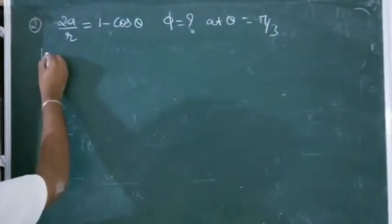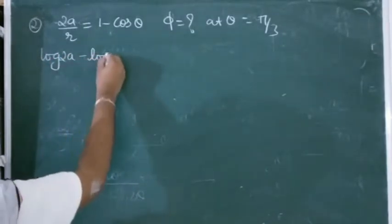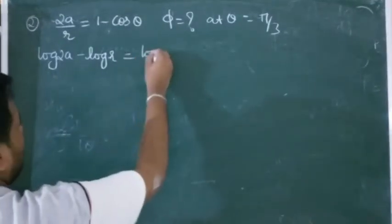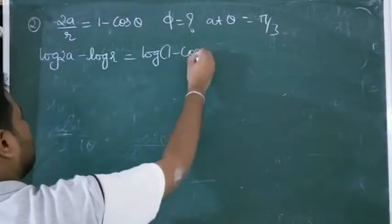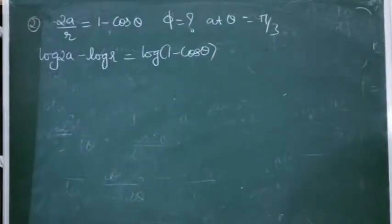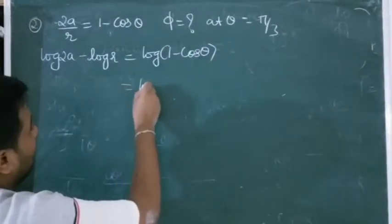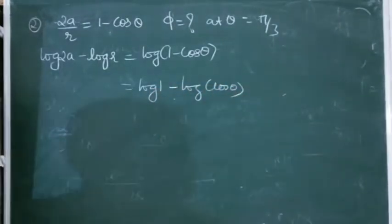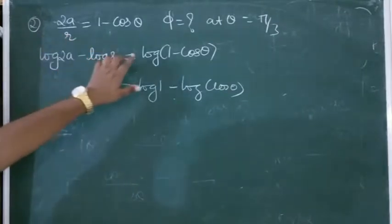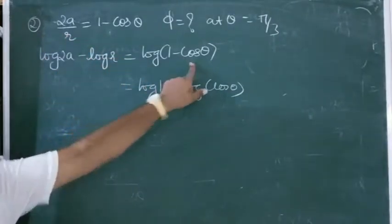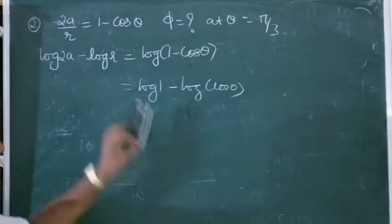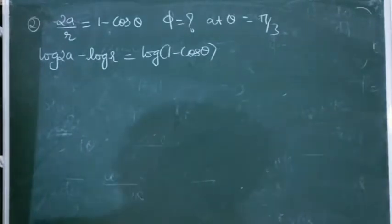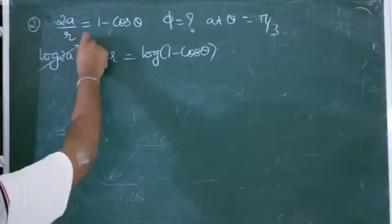My approach is fixed. Taking log: log(2a) - log(r) = log(1 - cosθ). One common mistake people make is writing log(1) - log(cosθ) — you cannot split log of a sum like that. You must take log of the whole expression (1 - cosθ).